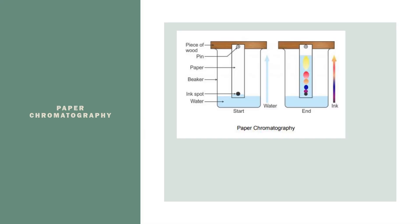Let's start with paper chromatography. It's the most common that you'll see on the AP Chemistry exam because it has the simplest materials involved. You're going to start with water or some kind of solvent — typically water — and you'll have a mixture on a piece of paper. You put the paper into the water, and the water will start to move up the paper using intermolecular forces.